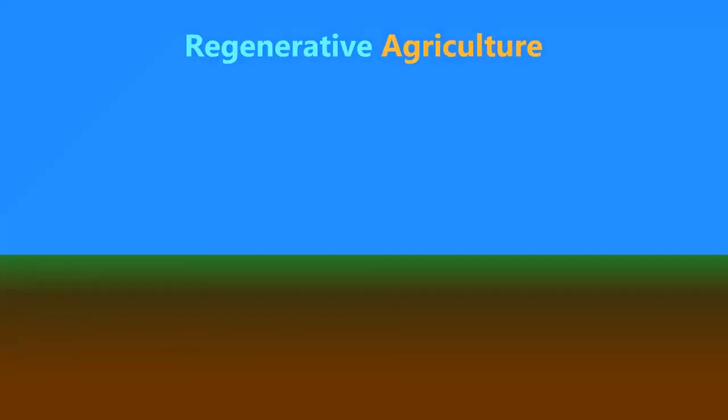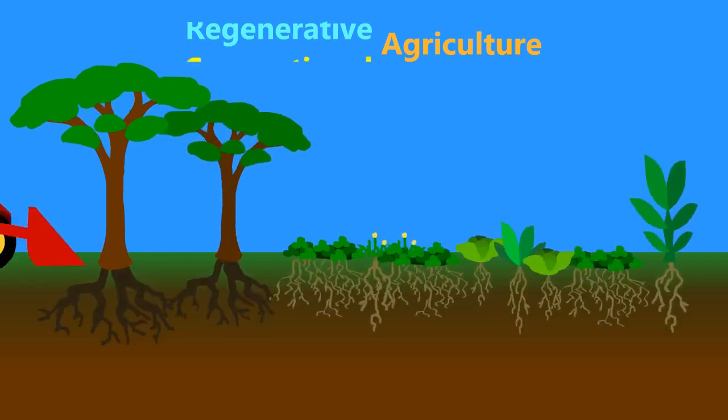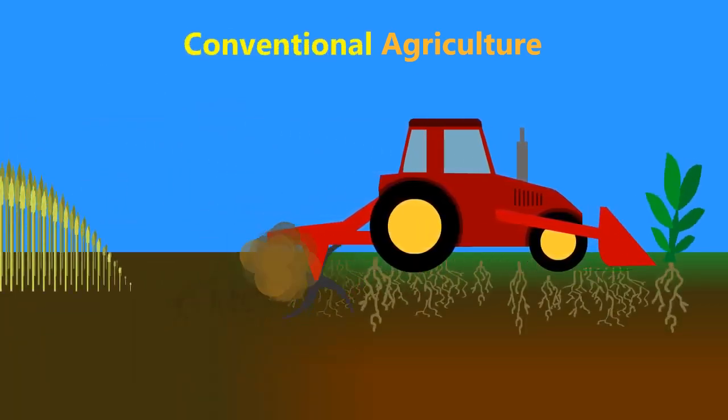Regenerative agriculture is a set of farming practices that increase biodiversity and soil organic matter. Currently, most agricultural practices are devastating to biodiversity.